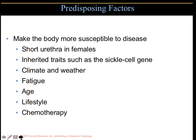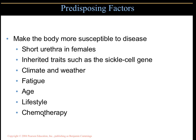Factors that predispose people to disease include anatomy — urinary tract infections are more common in women because the female urethra is only about two centimeters, while males have a longer urethra. Other predisposing factors are inherited traits like sickle cell anemia, climate and weather, fatigue, stress, age, lifestyle, and chemotherapy, which compromises the immune system and makes patients susceptible to infections.